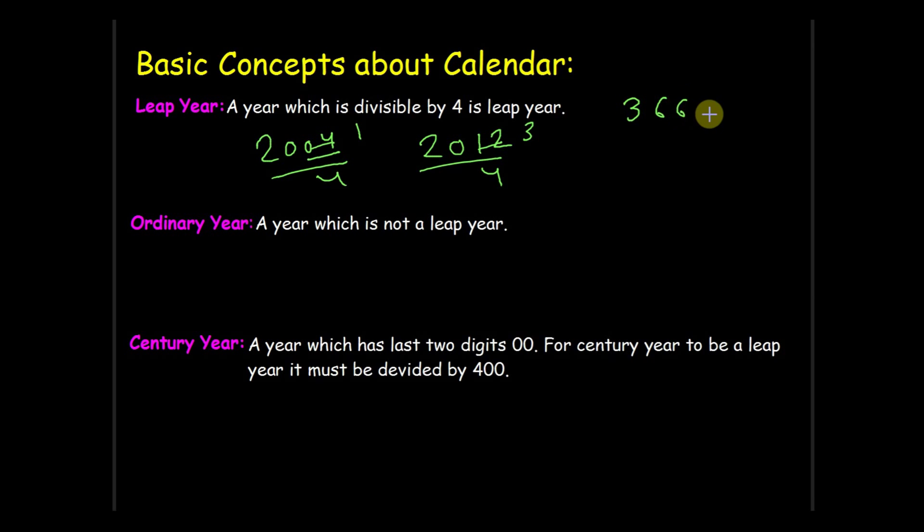One more thing is leap year has 366 days. Second is ordinary year. A year which is not a leap year is an ordinary year. So obviously, ordinary year is not divisible by four. For example, 1989 - it is not divisible by four, and 2005 is also an ordinary year.